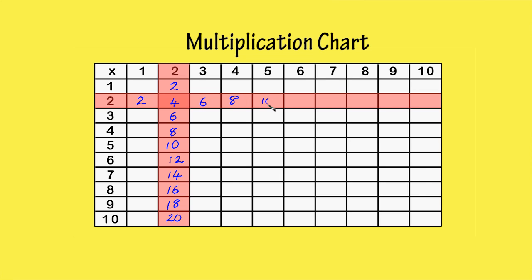Five times two is ten. Six times two is twelve. Seven times two is fourteen. Eight times two is sixteen. Nine times two is eighteen. Ten times two is twenty.